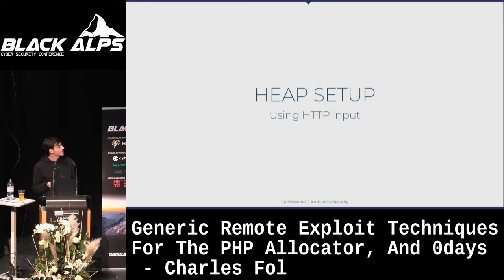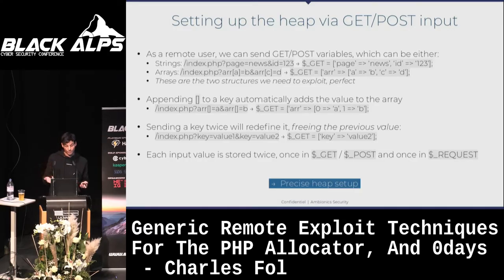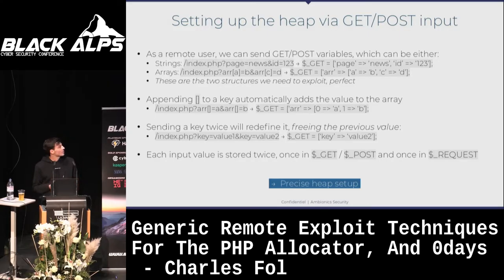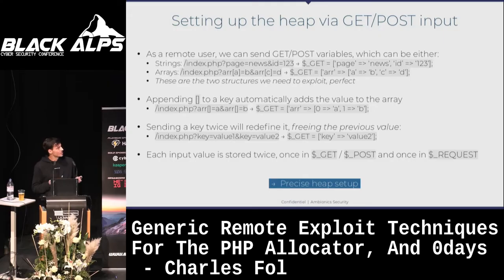We can actually do this pretty easily. There are two things you can allocate in PHP using input: strings simply — like page=news&id=123, so you get 'news', 'page', 'id', '123' all allocated as ZendString objects — and you can also send arrays using bracket notation to force PHP to create arrays. For freeing: we can send a key twice. PHP will allocate the first value, then realize there's another key, allocate the second value, and free the first. So with just GET and POST data, we can allocate and free basically anything.